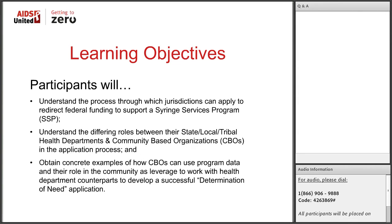At the end of the webinar today, we hope that participants will gain a deeper understanding of the process through which jurisdictions can apply to redirect federal funding to support the Syringe Services Program, that you'll understand the different roles between state, local, and tribal health departments and community-based organizations in the application process, and obtain concrete examples of how CBOs can use their program data to work with health departments in developing successful applications.